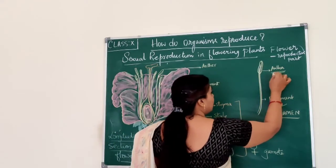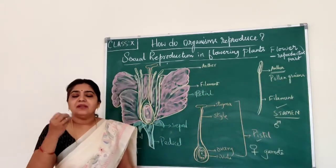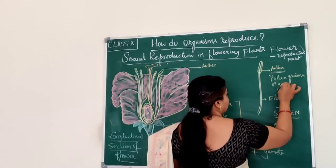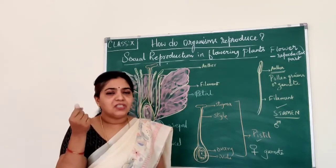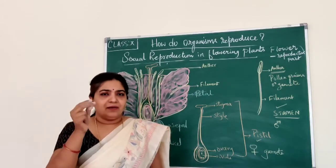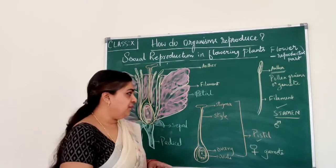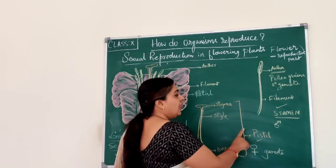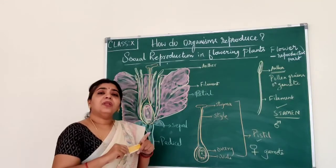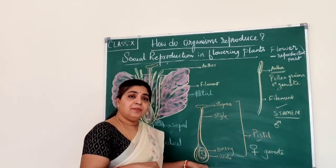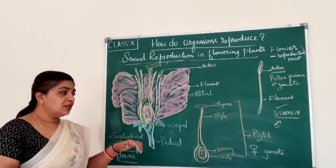The anther contains the pollen grains. The pollen grains contain the male gametes — they carry the male sex cells. Whenever you touch the anther, the yellow powdery substance will stick to your fingers; that substance is nothing but the pollen grains. Inside the pollen grains only the male gametes are present. Inside the ovule the female gametes are present, and the ovary helps in protecting the ovule.